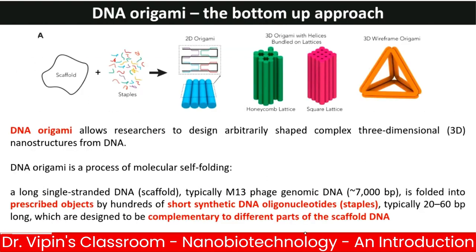DNA origami allows researchers to design arbitrarily shaped complex three-dimensional structures starting from DNA. It is a process of molecular folding of a long single-stranded DNA scaffold — typically M13 phage genomic DNA of 7000 base pairs — folded into a prescribed object by hundreds of short synthetic DNA oligonucleotides called staples, typically 20 to 60 base pairs long, designed to be complementary to different parts of the scaffold DNA.